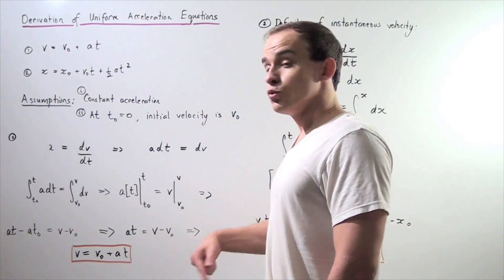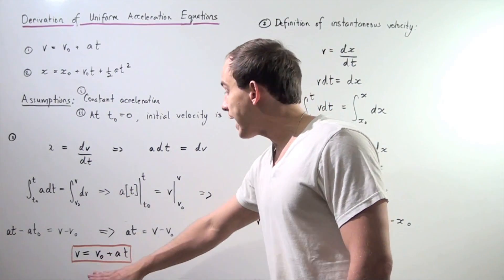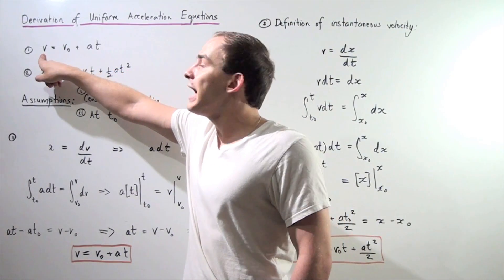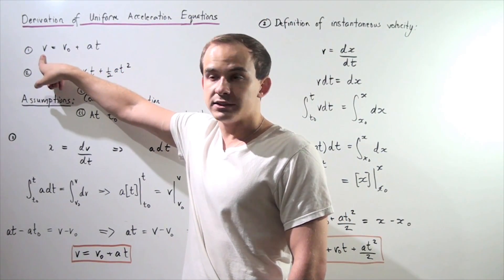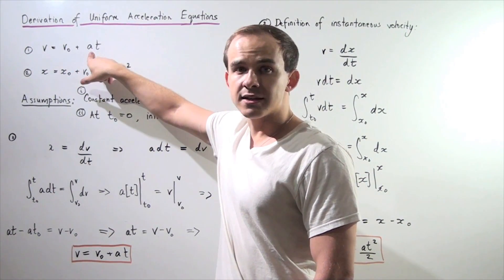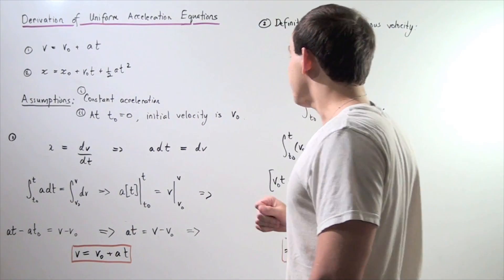In a final step, we rearrange, we bring the v-naught over and we are left with our formula that we wanted to derive. So the final velocity of the object equals the initial velocity of that object plus our constant acceleration times our time, the final time.